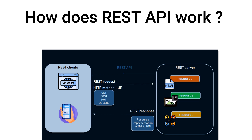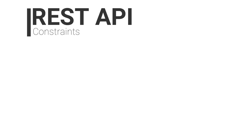Some other alternative API data formats include XML, YAML, CSV, HTML, and plain text. While REST APIs are appreciated for their simplicity and flexibility, they still have to respect some constraints to be considered RESTful. These are the guiding principles of a REST API design.